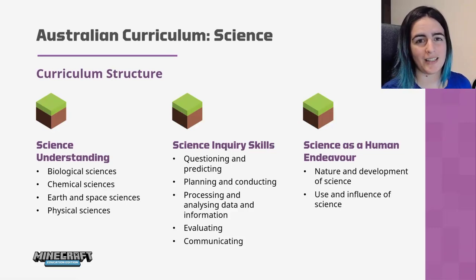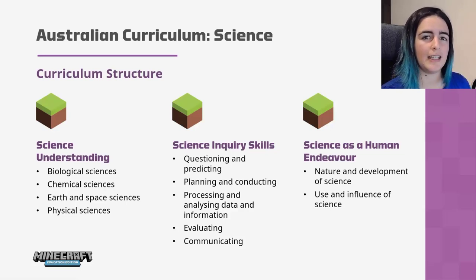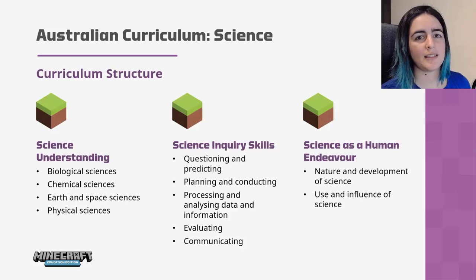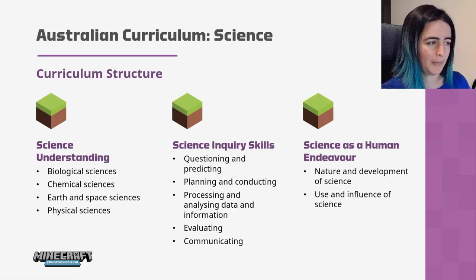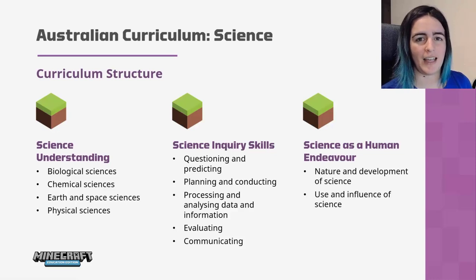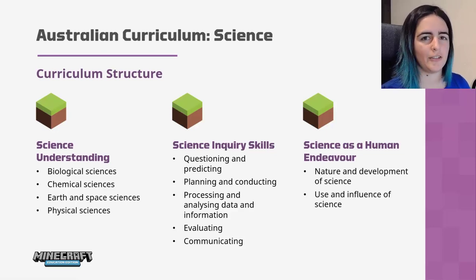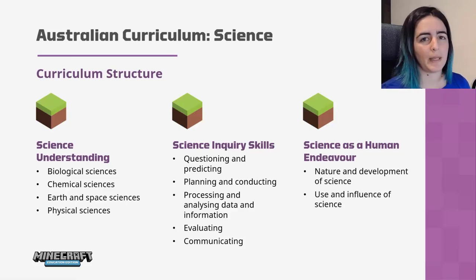The second strand is science inquiry skills, covered throughout the whole year. It involves the experimental side and the skills in running a science experiment — starting with questioning and predicting, moving through to planning and conducting an experiment, processing and analysing the data collected, evaluating that data, and then communicating your results. The skills in this strand advance as students get older.